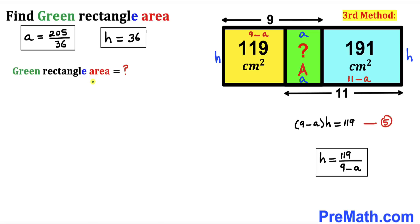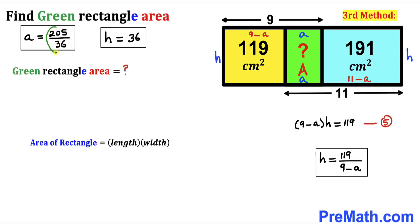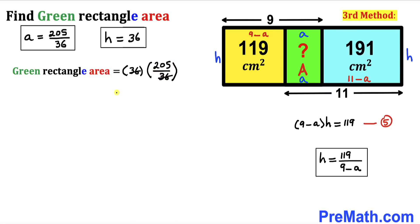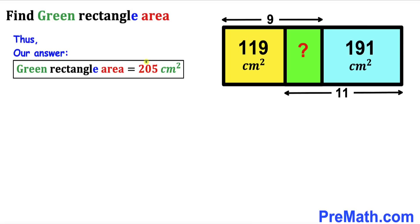Here's the final step. The area of the green rectangle equals length times width: (205/36) × 36. The 36s cancel, so the green rectangle area turns out to be 205 centimeter square — confirming our answer with the third method as well.